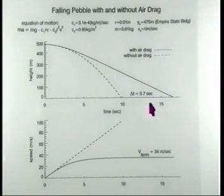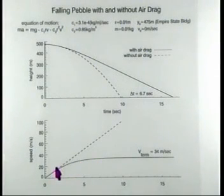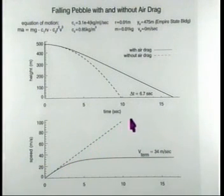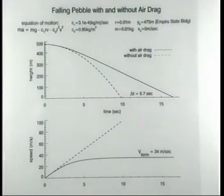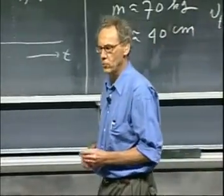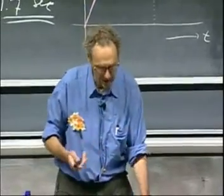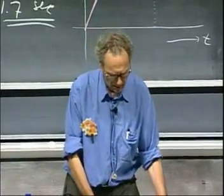You see that the terminal speed builds up. In about 5 or 6 seconds, it's very close to the final value. And if there had been no air drag, then the speed at which it would hit the ground would, of course, grow linearly. And when it hits the ground, it would be somewhere here, which is 225 miles per hour. So you see that it is even a pebble — you wouldn't expect it to have a very large effect from air drag. It is huge, provided that you throw it from a high building.